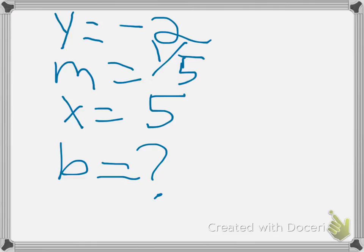Here is where everything is written down. y equals -2, m equals 1/5, x equals 5, and we still don't know b.